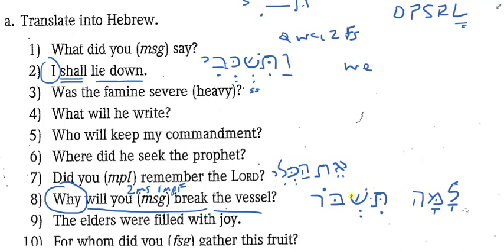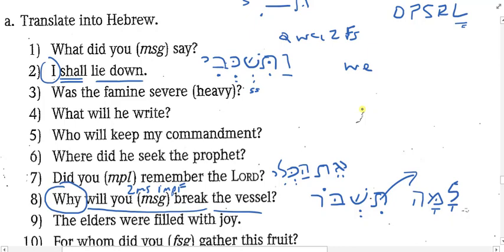Good question about whether the tav loses the dagesh lene because of the lamah before it — yes, in connected speech there's no pause between them, so there would be a vowel before it and you could see that dagesh lene drop out. Now let's change the verb: instead of 'why will you break the vessel,' say 'why will you keep the vessel.' The verb for keep is shamar. Everything stays the same except the root letters — just switch shavar to shamar. Lamah tishmor et ha-khali.